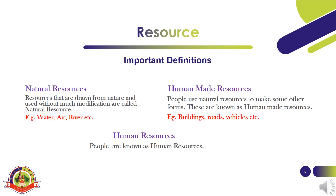The third type is human resources. Human beings are known as human resources. People can make the best use of nature to create more resources when they have knowledge, ideas and skills. Education and good health help them make valuable resources. All inventions, discoveries, and new creations are possible only because of our ideas, knowledge and creativity.